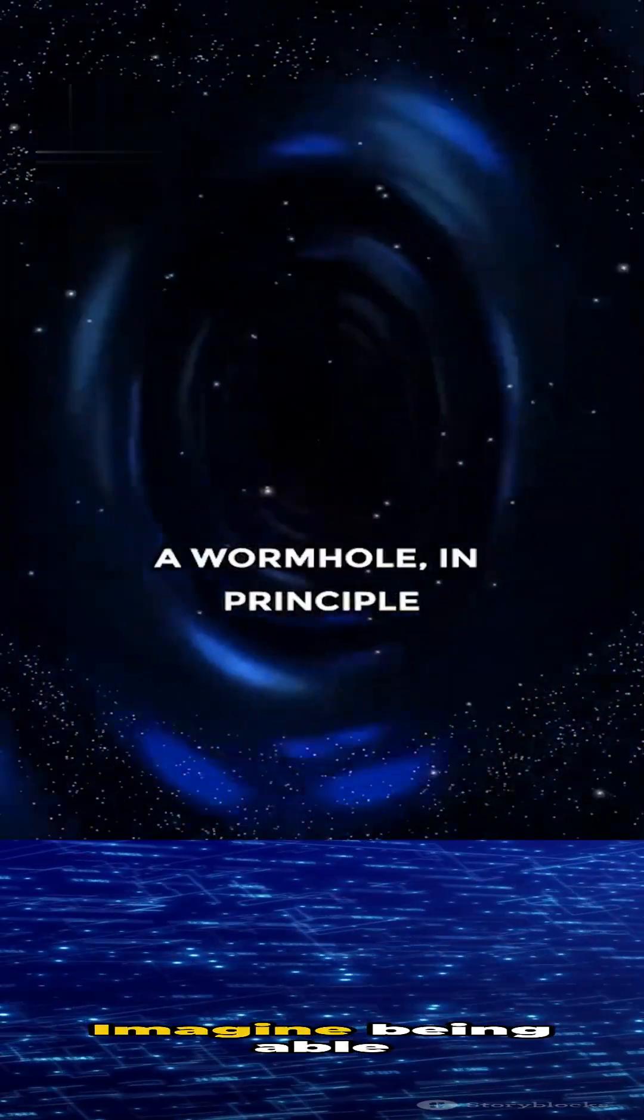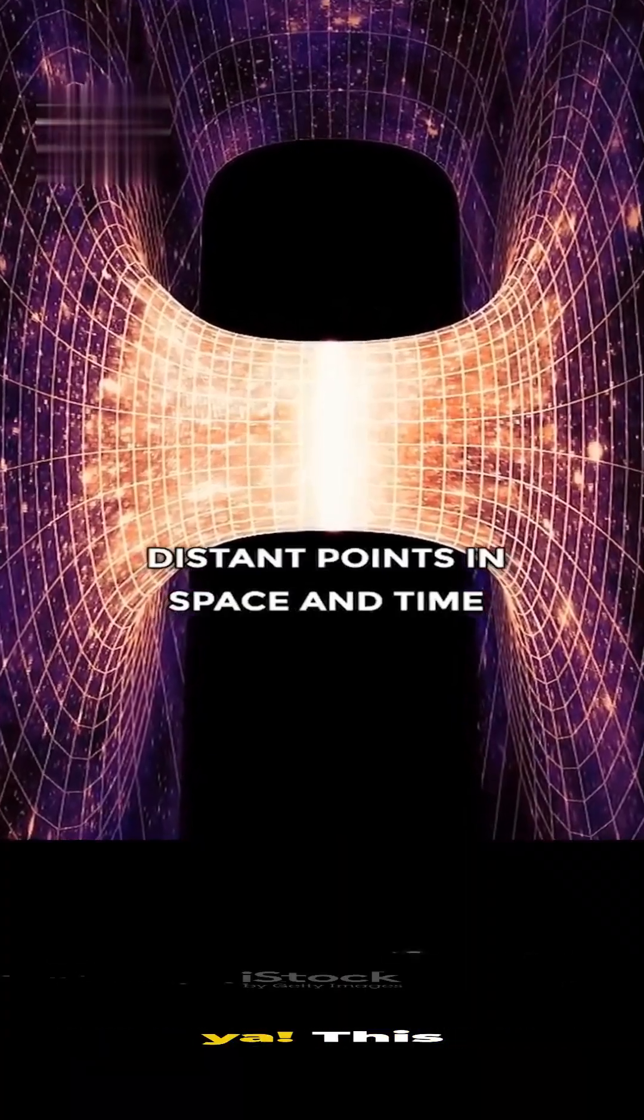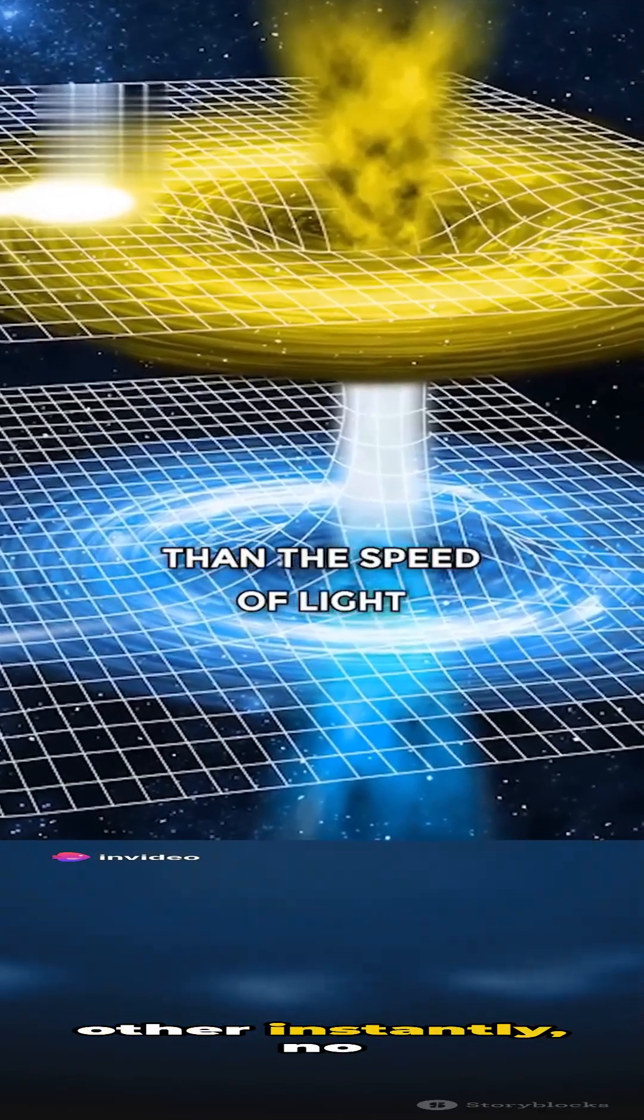Like for example, a wormhole. A wormhole in principle is a gateway between two distant points of space and time, which allows you to break the Einstein barrier and go faster than the speed of light.